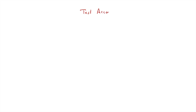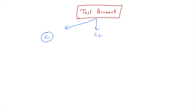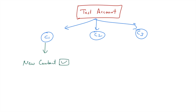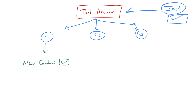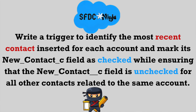Let me explain it again. Let's say we have an account called Test Account, and on this account we have some contacts: C1, C2, and C3. For the C1 contact, the New Contact checkbox is checked. Now, when a user inserts a new contact on this account, let's say Jack, then the New Contact checkbox field should get checked for Jack. And for other contacts, that checkbox should get unchecked — so the New Contact field of the C1 contact should get unchecked. This is what we are going to do today.